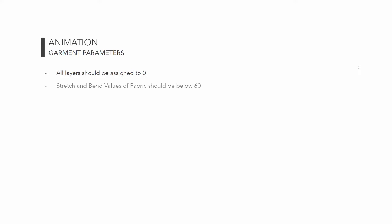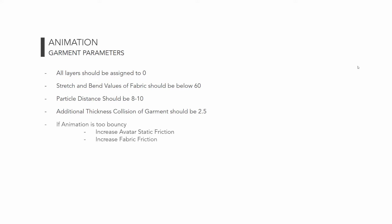All the layers should be assigned to zero. The stretch and bend values of the fabric should be below 60. The particle distance should be between 8 to 10. Additional thickness collision of the garment should be 2.5. If the animation is too bouncy, we can take extra measures like increasing the avatar static friction and increasing the fabric friction.